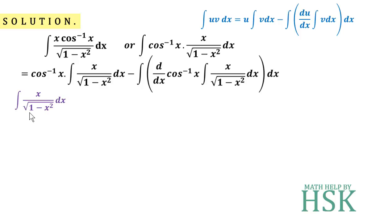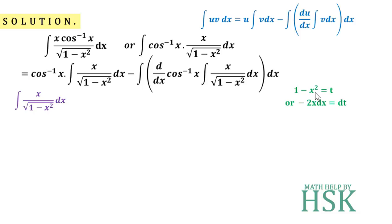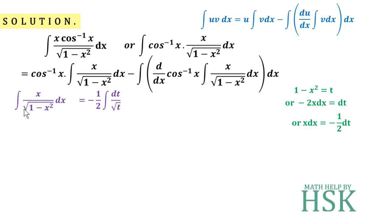Taking the integral of x over √(1-x²): to solve this I'm going to substitute 1 minus x² equal to t. On differentiating both sides with respect to x, I get minus 2x dx equal to dt. So x dx equals minus 1/2 dt. For the square root of 1 minus x², I substitute square root of t.